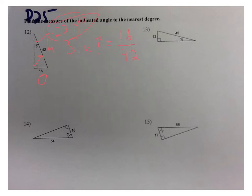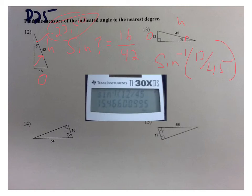This next one also asks for the angle. Here's the opposite side and here's the hypotenuse — another sine relationship. I'm going to do the inverse sine, the arc sine, of 12 divided by 45, because that's the opposite divided by the hypotenuse. That angle is 15.5 degrees.